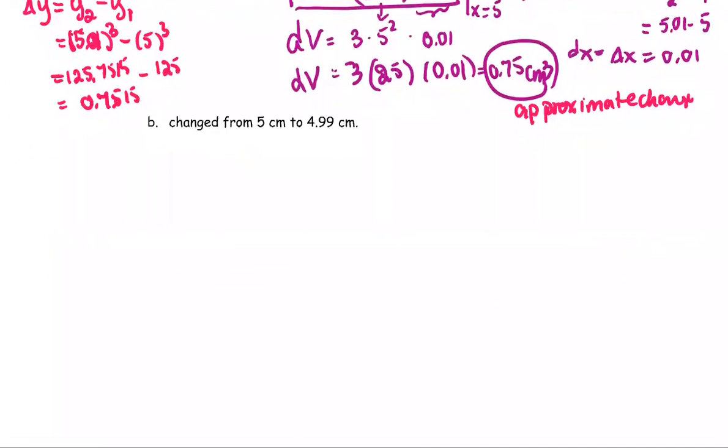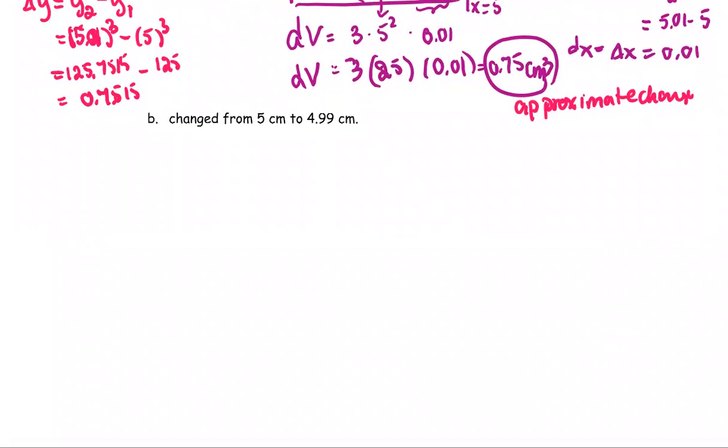And then this is when the side is decreasing. So in this case, the x1 is 5 centimeters, the x2 is 4.99. The delta x or the change in x, then the change from x1 to x2 or x2 minus x1 equals 4.99 minus 5 or negative 0.01 centimeters. So this is the change in the decreasing way.